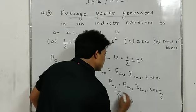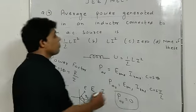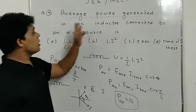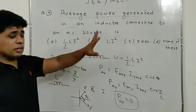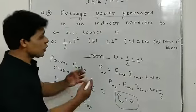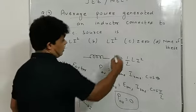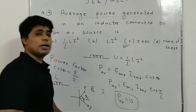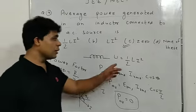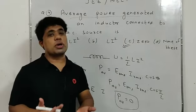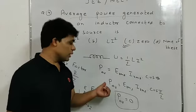P_average = Erms × Irms × cos 90° = Erms × Irms × 0 = 0. So the average power generated in an inductor is zero. Option C is the correct answer. Keep in mind: half LI² is the energy stored by the inductor, but average power dissipated is zero.